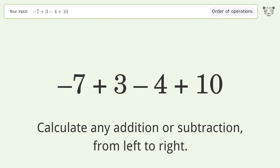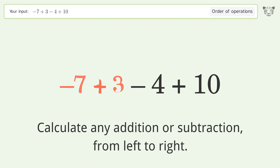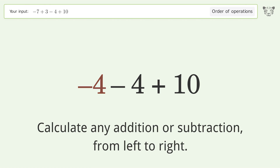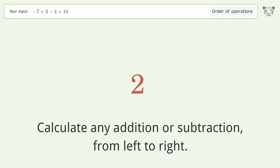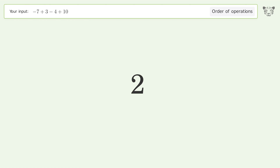Calculate any addition or subtraction from left to right: negative seven plus three equals negative four, negative four minus four equals negative eight, negative eight plus ten equals two. And so the final result is two.